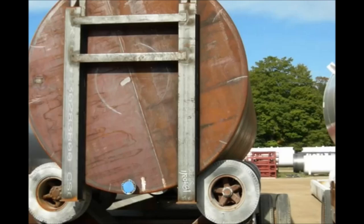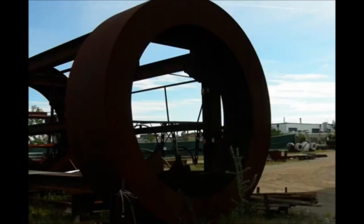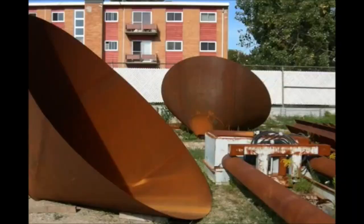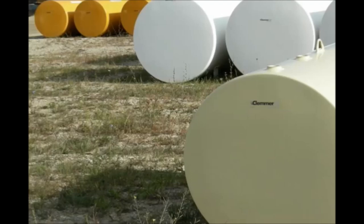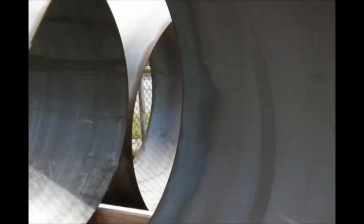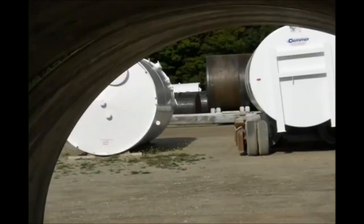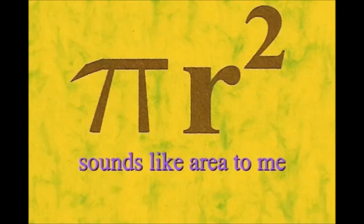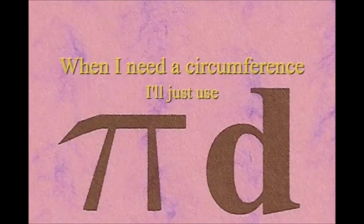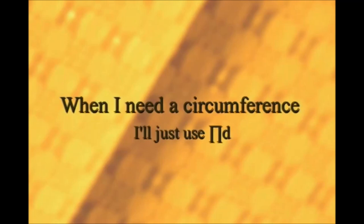Here is a circle, it knows how to get around. It has a radius from center to rim. And its diameter's a line that goes from side to side while passing through the center, now isn't that simple. Pi r squared sounds like area to me, when I need a circumference, I'll just use pi d.